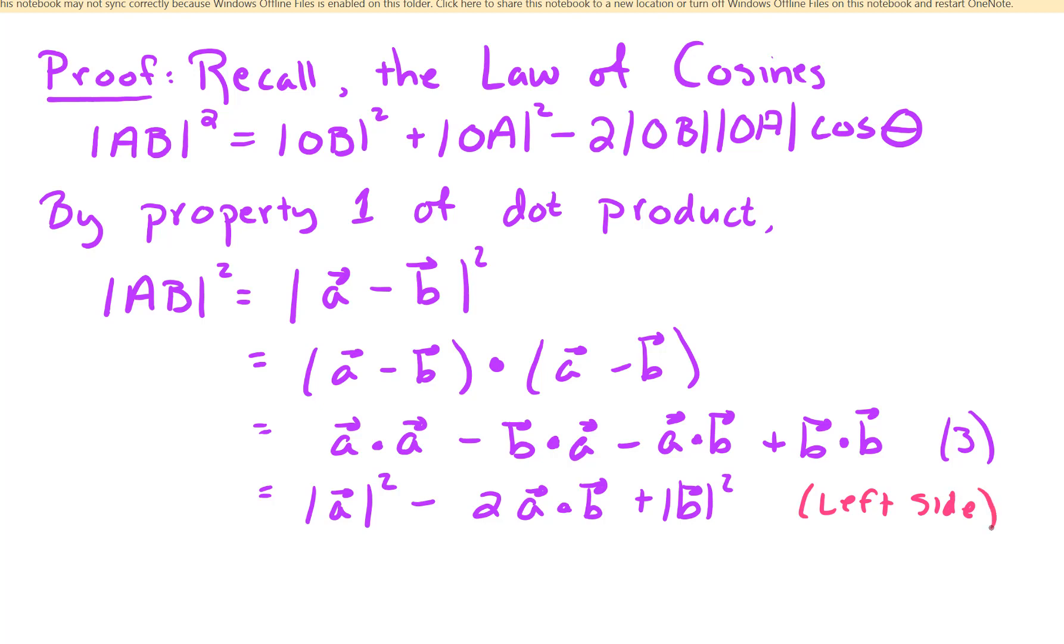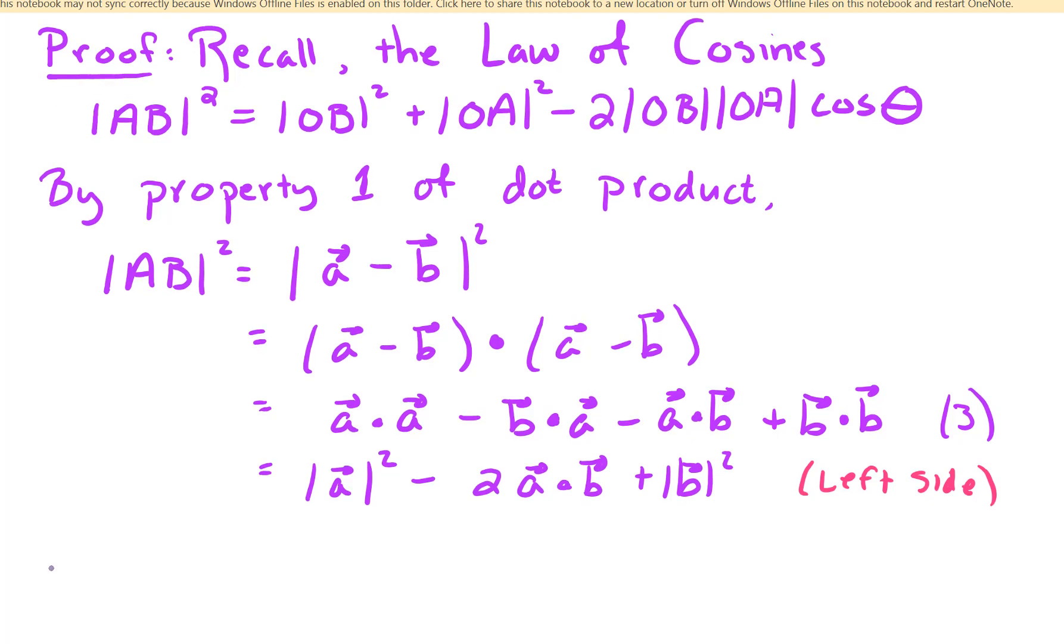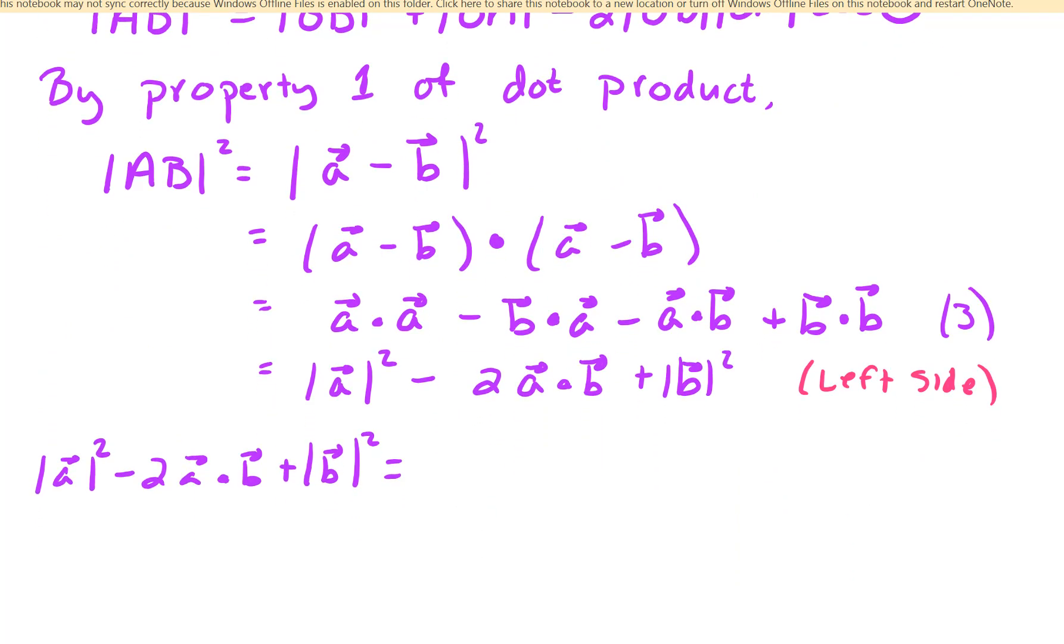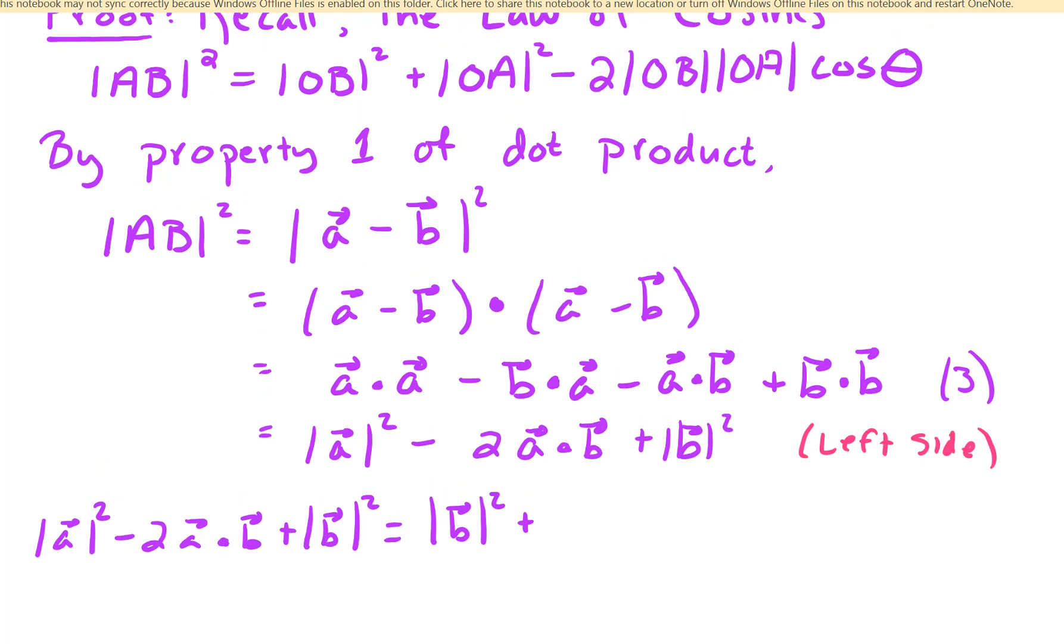So that's going to be our left side of the equation. And as I said, we can also go through and replace these other lengths, so let's do that. So on our left hand side, now we have the magnitude of a squared minus 2a dot b plus the length of b squared. And let's replace the length of OB. Well, the length of OB is just the magnitude of b squared. And the length of OA, that's just the magnitude of vector a squared minus 2 length of a times length of b times cosine of theta.